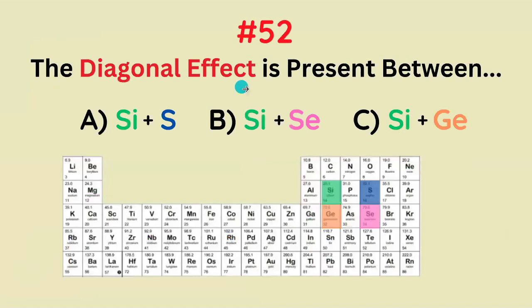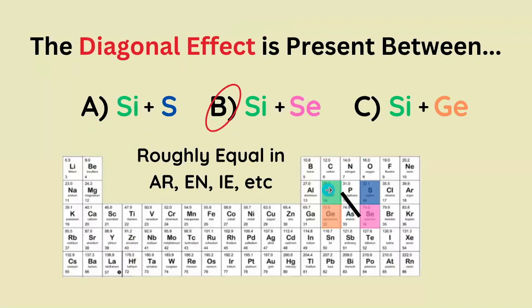The diagonal effect is present between what set of elements? It's going to be the green and pink elements, because they're very close to each other and very equal in atomic radius, electronegativity, ionization energy, etc.